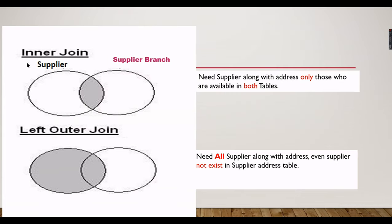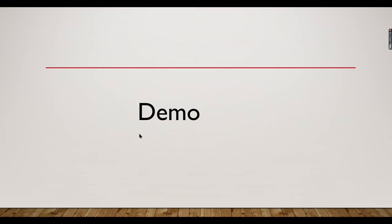Join types explained: Inner Join — returns only suppliers that exist in both tables (the intersection). Left Outer Join — returns all suppliers from the left (base) table and matching branch data from the right table; if no match exists, null is returned. Choose the join type based on whether you need all records from one table or only matching records.